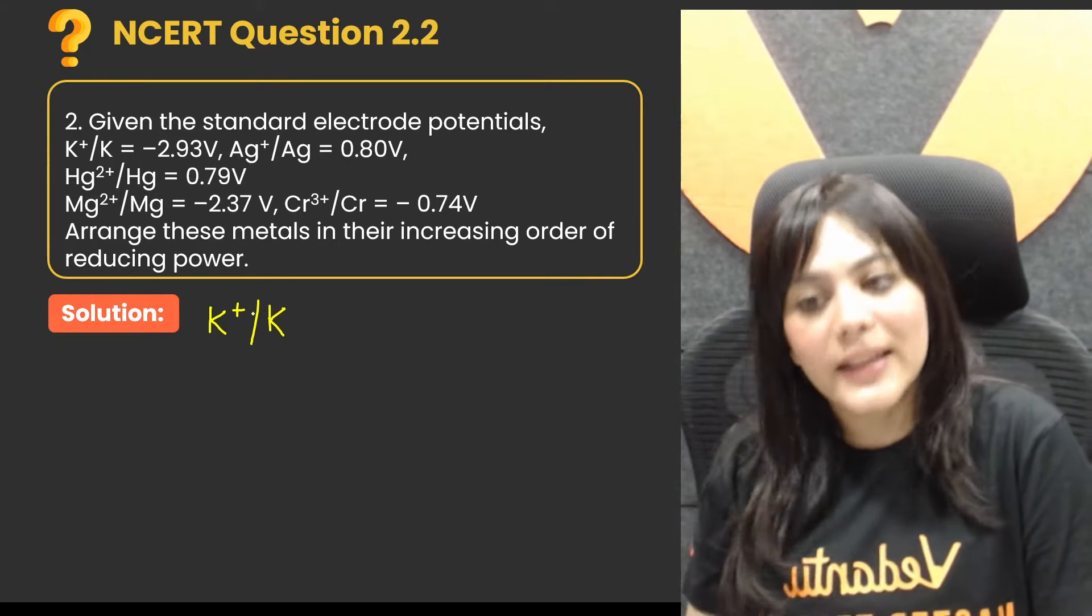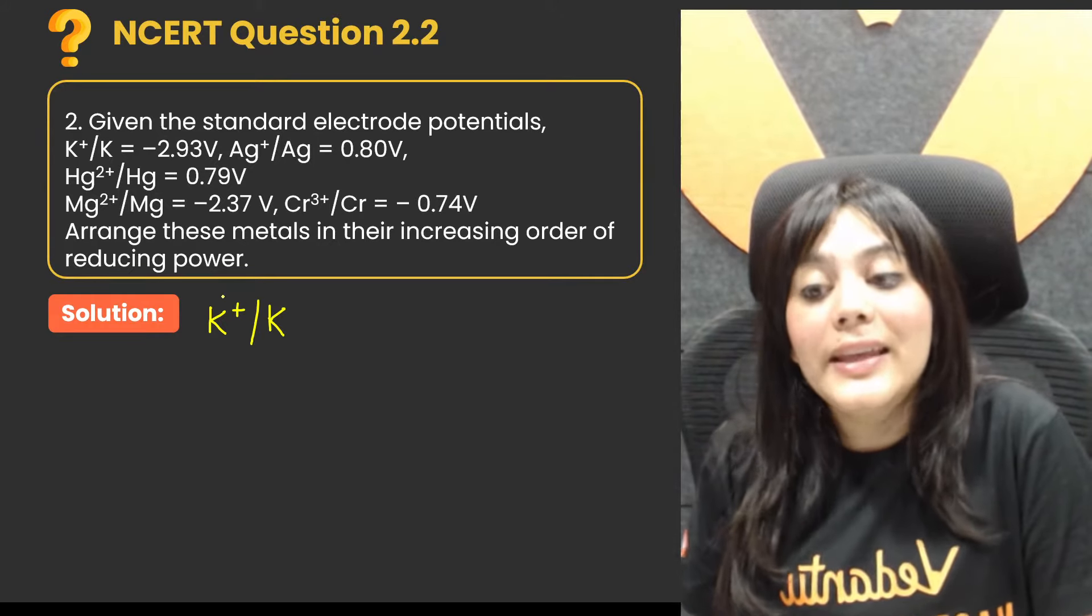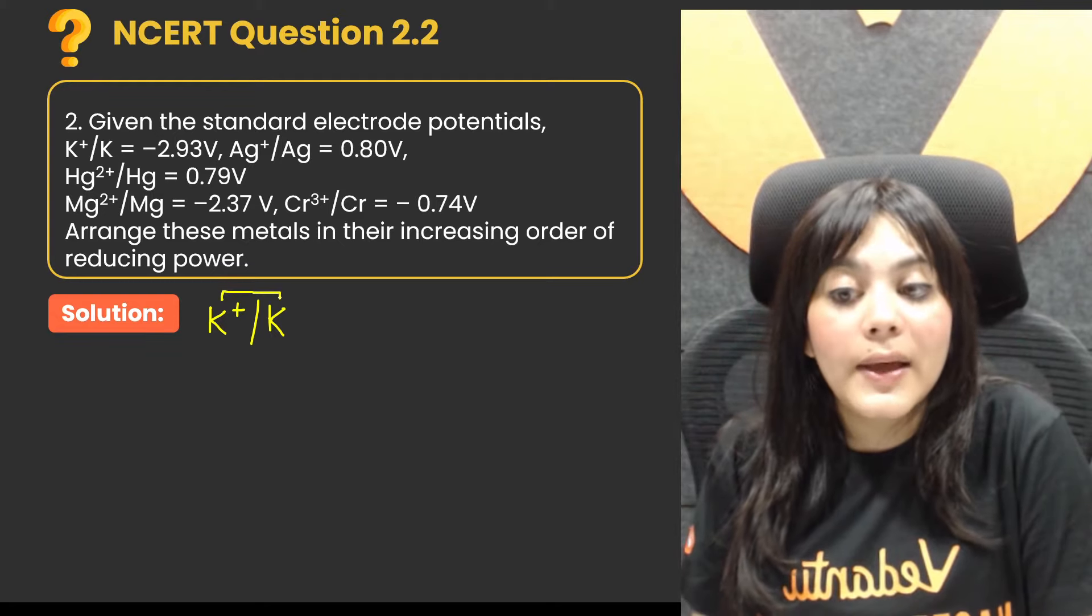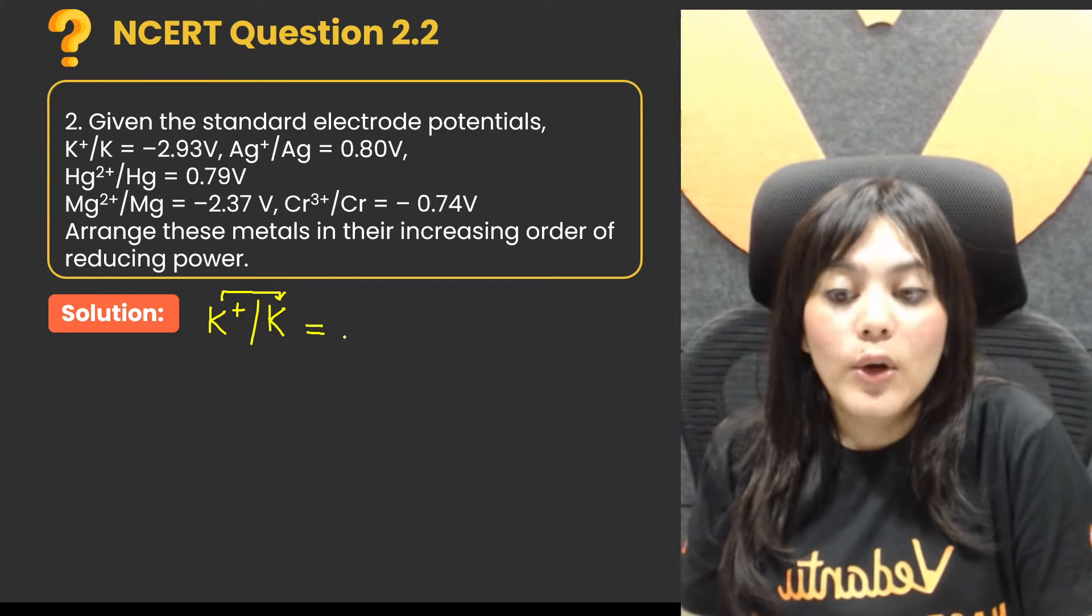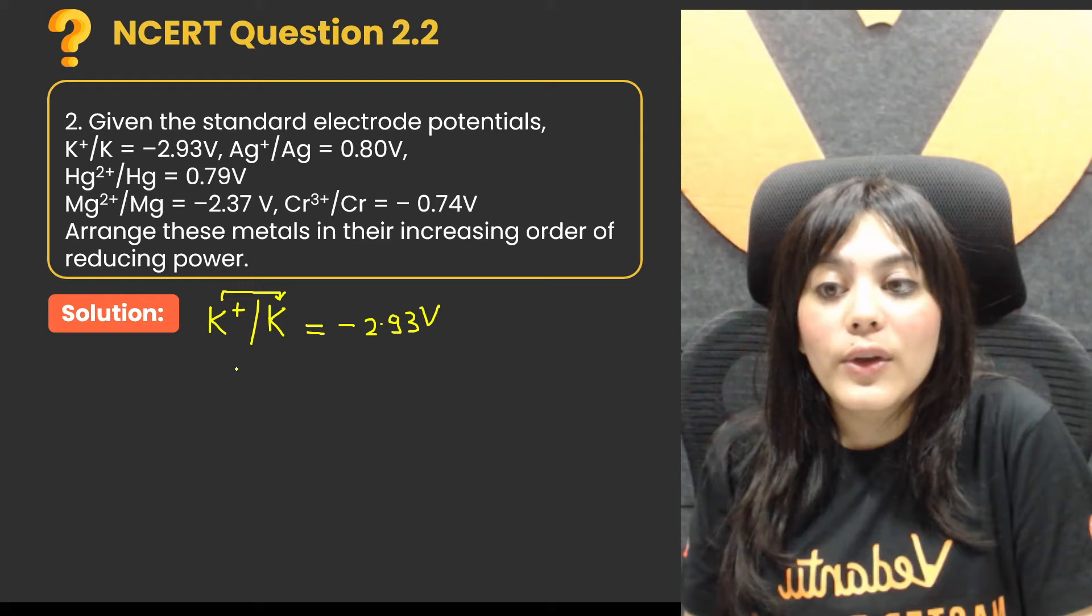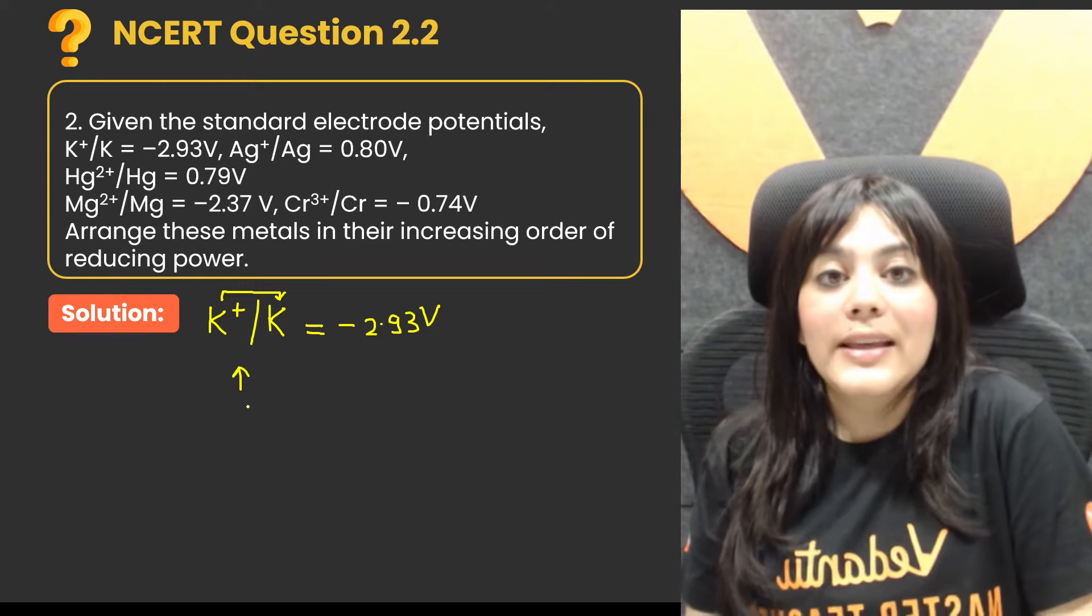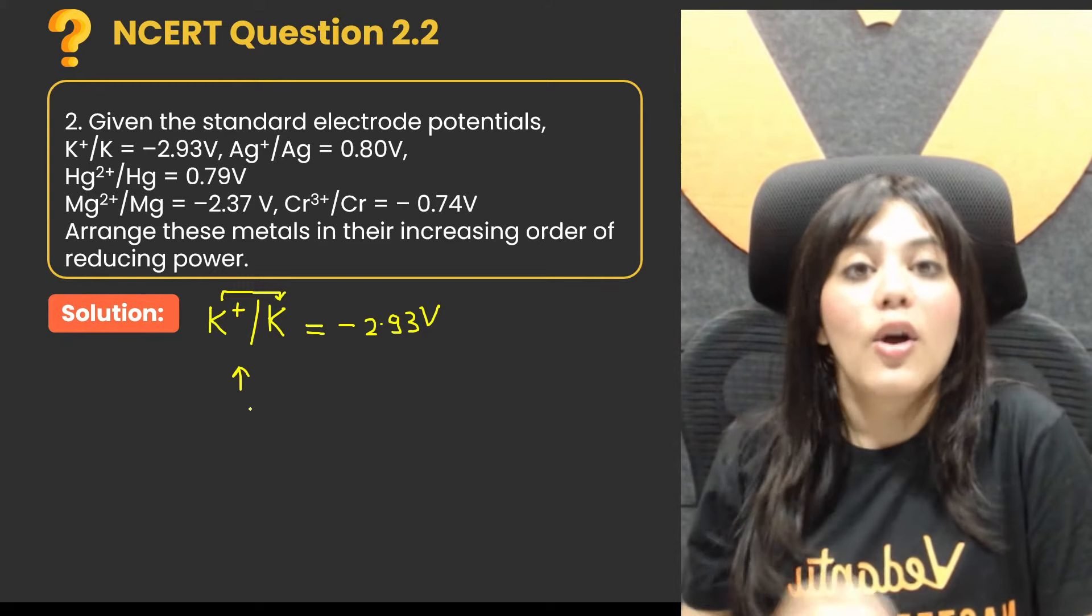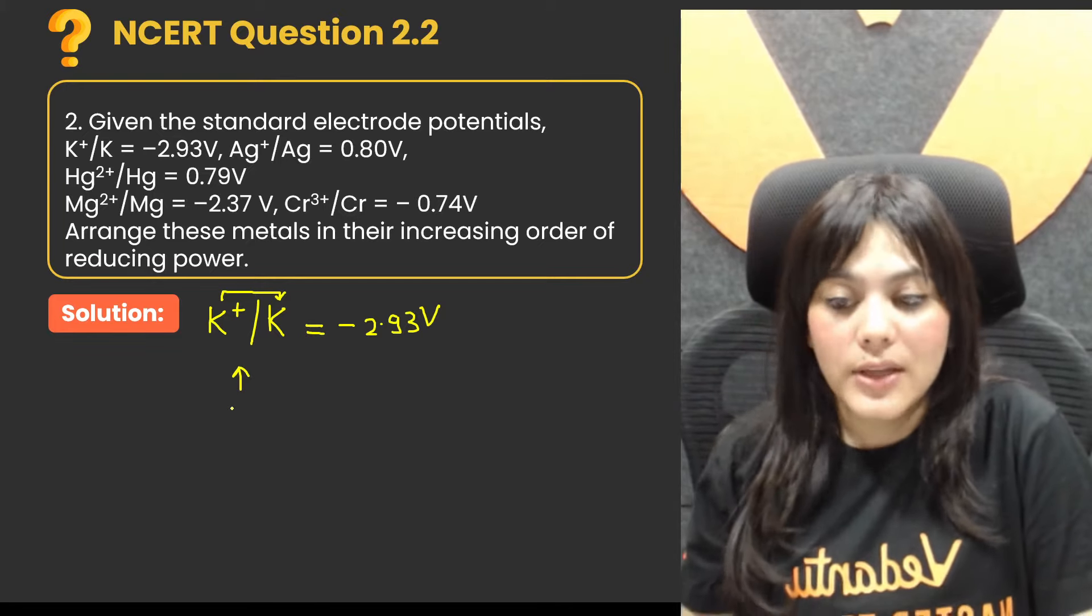If we look at this notation, this means that K+/K, this means that K can be reduced with this voltage. This is your minus 2.93 volts. What does this mean? This means that reducing potential. What is the potential? Reducing potential.